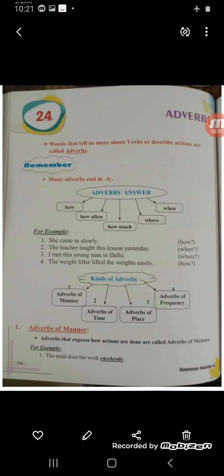These questions are asked to the verb. How do you walk? I walk smartly — so you get the answer for the action by asking 'how?' Similarly, how often? How much? When? And where? Now, a few examples: She came in slowly. How did she come? Slowly. So the answer is 'slowly,' and slowly is an adverb.